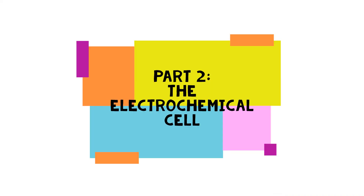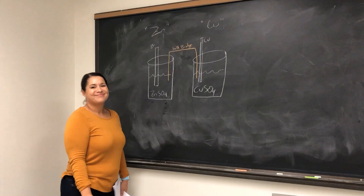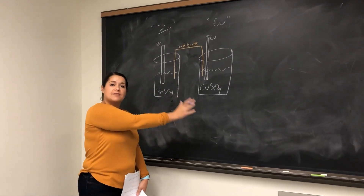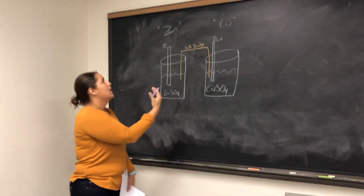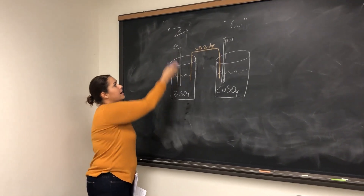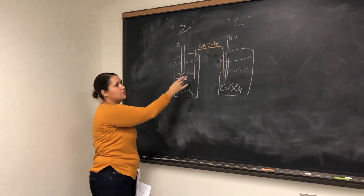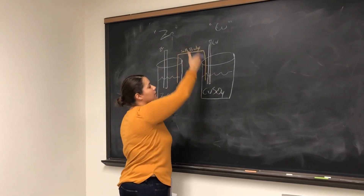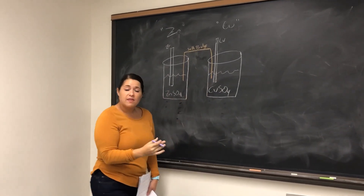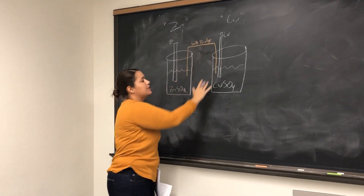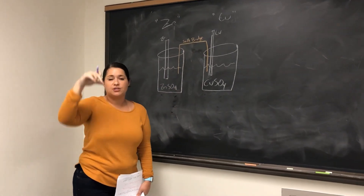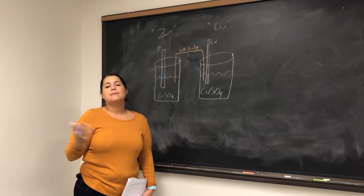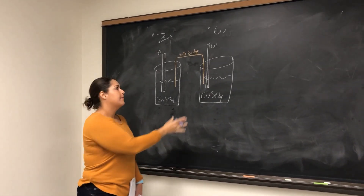Now part two. In part two of this experiment, we're going to have two half-cells connected by a salt bridge. We have a solution of zinc sulfate and a zinc plate in solution, and we're going to have a copper sulfate solution with copper inserted in that solution. Between them you're going to have your salt bridge, which is going to be your saturated filter paper. Do you remember why it's important to have this salt bridge connected between them?